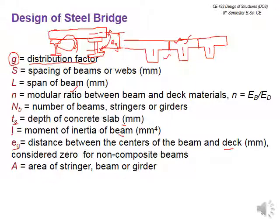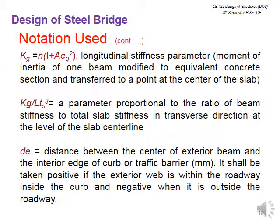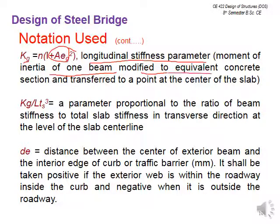Capital A is the area of the stringer, beam, or girder. The parameter KG equals n(I + A·eg²). This is the longitudinal stiffness parameter — the moment of inertia of one beam modified to the equivalent concrete section and transferred to a point at the center of the slab. Capital I is the moment of inertia of the beam itself about its own center.